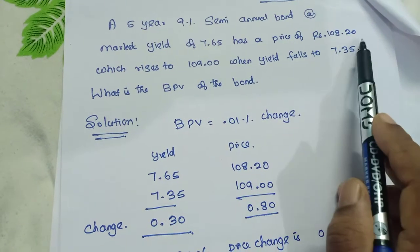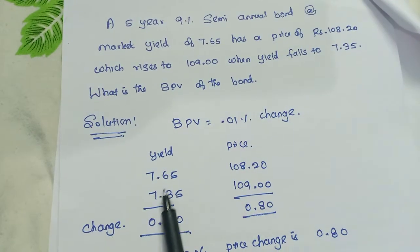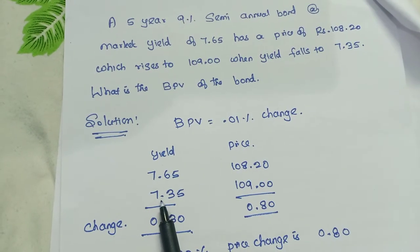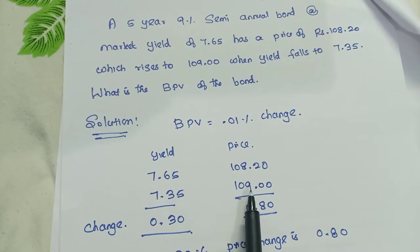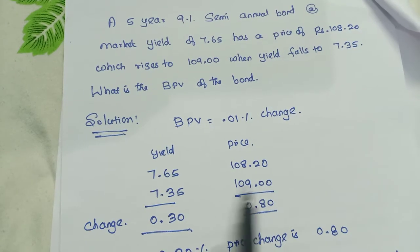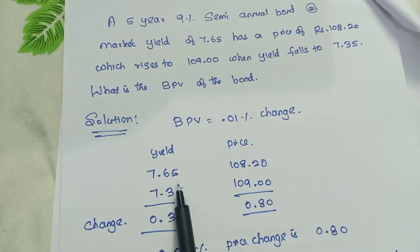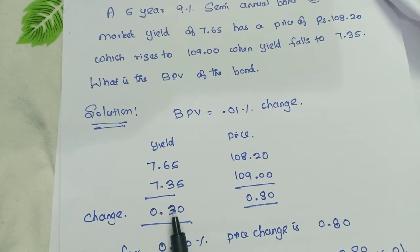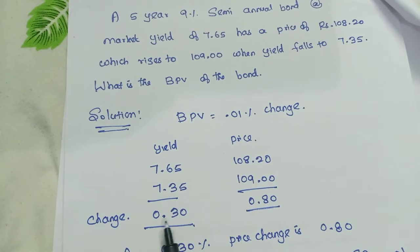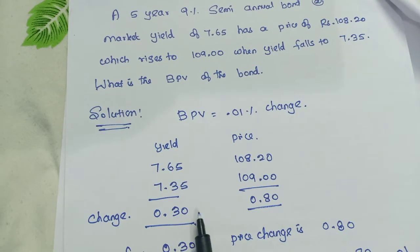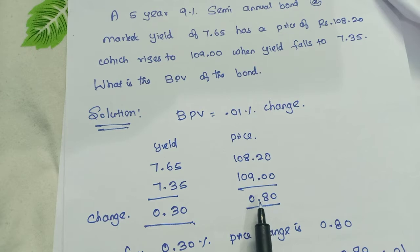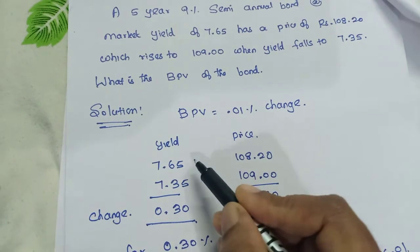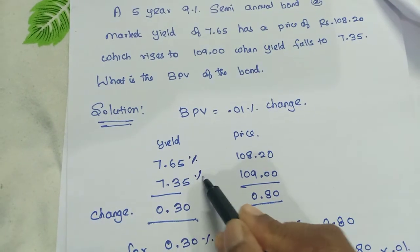Yield for 7.65 percentage, the price is 108.20. Here it's given. And for yield 7.35 percentage, the price is 109. So by subtracting I am getting the change. Here the change is 0.3 percentage. Here the price is 0.8 percentage.